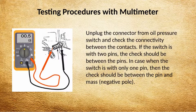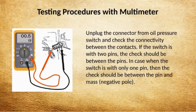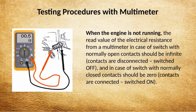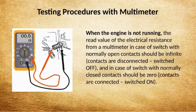Testing Procedures with Multimeter: Unplug the connector from the oil pressure switch and check the connectivity between the contacts. If the switch has two pins, the check should be between the two pins. If the switch has only one pin, the check should be between the pin and mass — the negative pole. When the engine is not running, the multimeter resistance reading for a normally open switch should be infinite (contacts disconnected, switched off), and for a normally closed switch should be 0 (contacts connected, switched on).